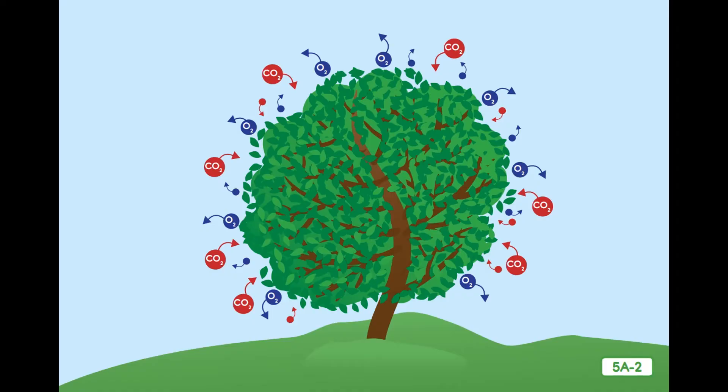Tree roots help to fight soil erosion and flooding by holding the soil together and absorbing water from the soil. Finally, we use trees, or the wood that comes from trees, all over the world for all kinds of things. Can you think of three things that the wood from trees is used for?